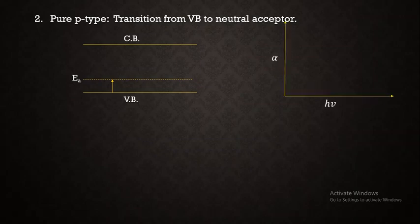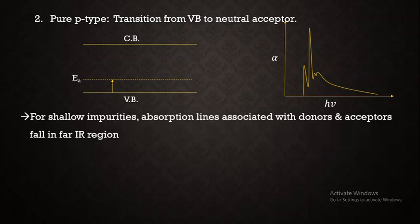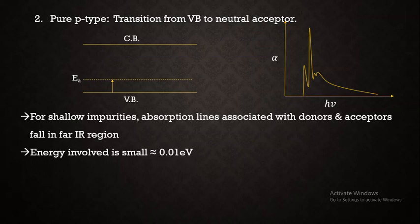Considering the absorption spectrum — the graph of absorption coefficient as a function of photon energy hν — for a boron-doped silicon sample, if there are shallow impurities, the absorption lines associated with donors as well as acceptors fall in the far infrared region. This is because the energy involved is very small, of the range 0.01 electron volt, so the corresponding spectral region is the far infrared.